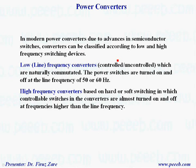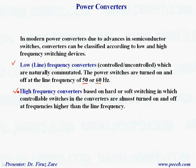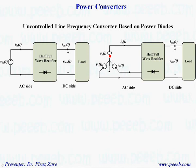The first type is low or line frequency converters, because sometimes we switch at line frequency, which can be either 50 or 60 Hz. Normally these converters are controlled or uncontrolled rectifiers. The next type is high frequency converters based on hard or soft switching, in which controllable switches like MOSFETs or IGBTs in the converters are turned on and off at frequencies higher than the line frequency.